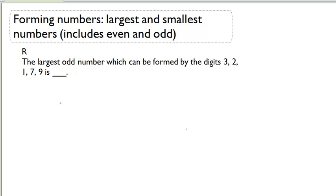So let's lay that out. 1, 2, 3, 4, 5. We have 5 digits. 3, 2, 1, 7, 9.